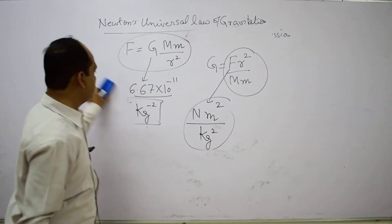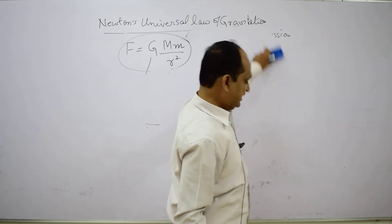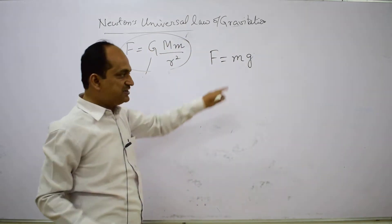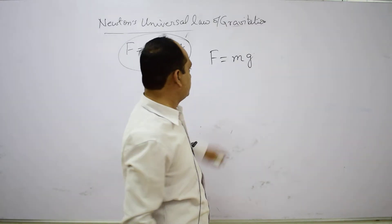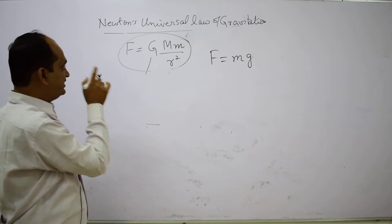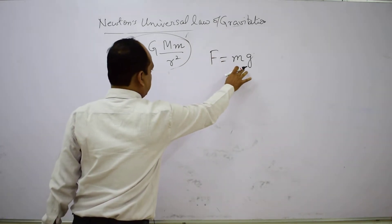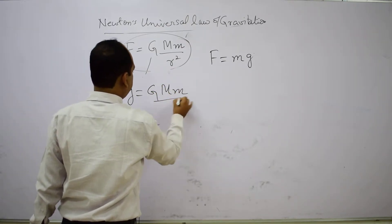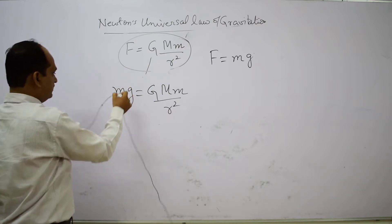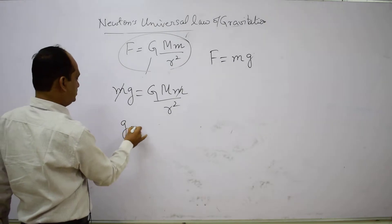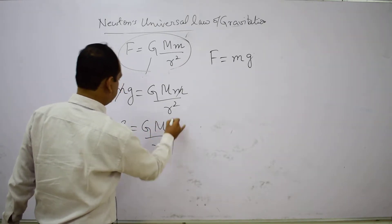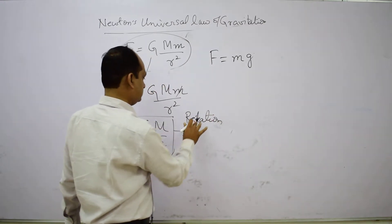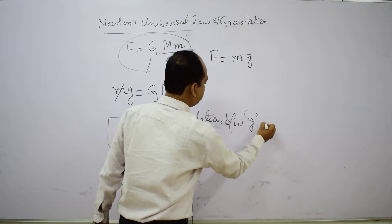Since we know that F equals M times small g, where M is the mass of the body and small g is acceleration due to gravity, we can substitute this into our gravitational formula. Substituting F equals M small g into F equals G M m upon R square, M cancels on both sides, giving us the relation: small g equals capital G times M upon R square.